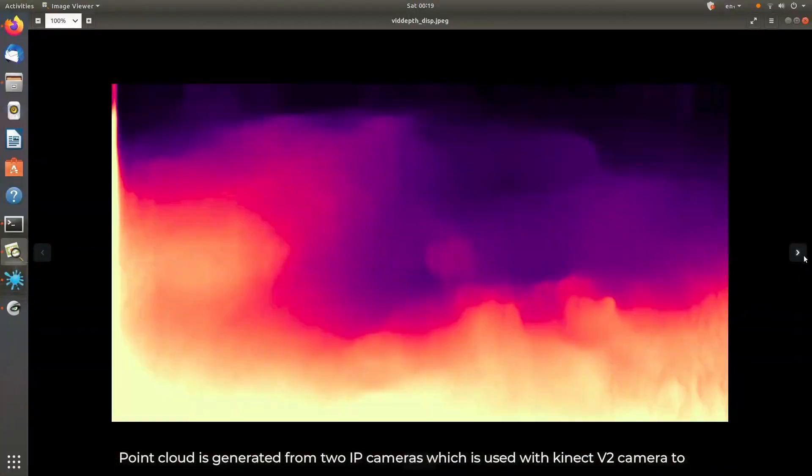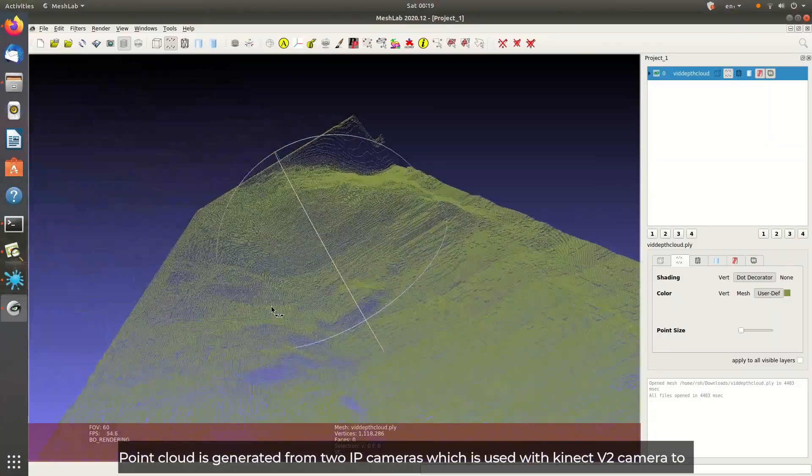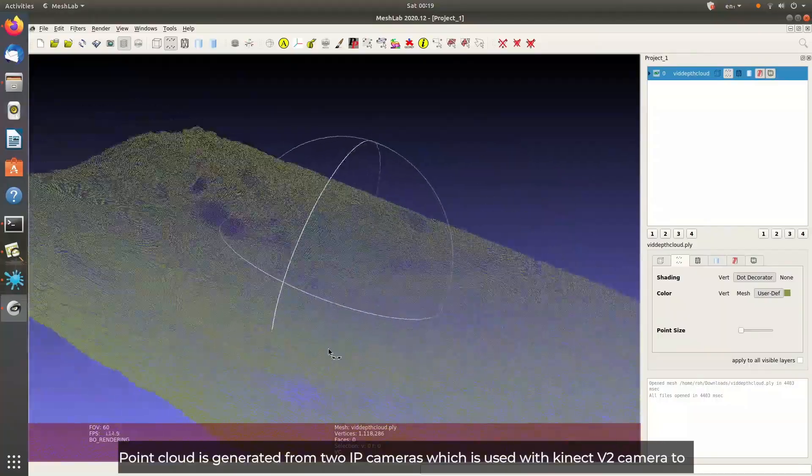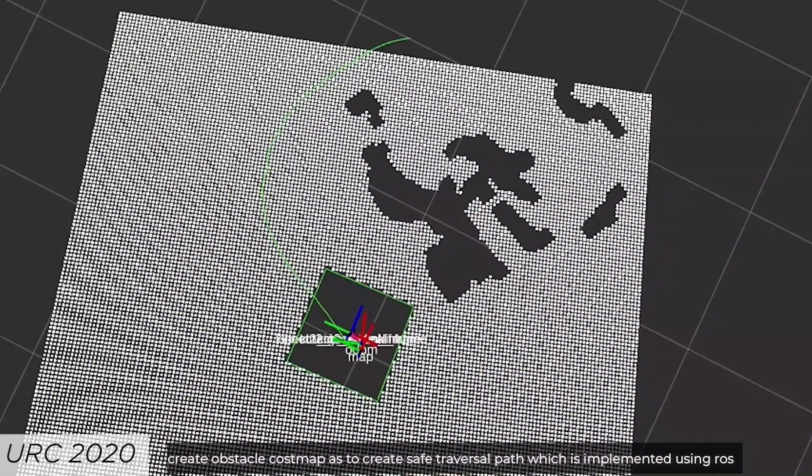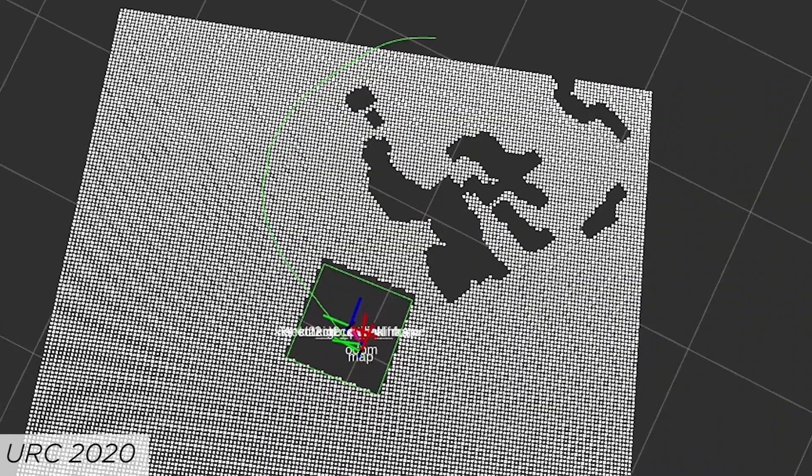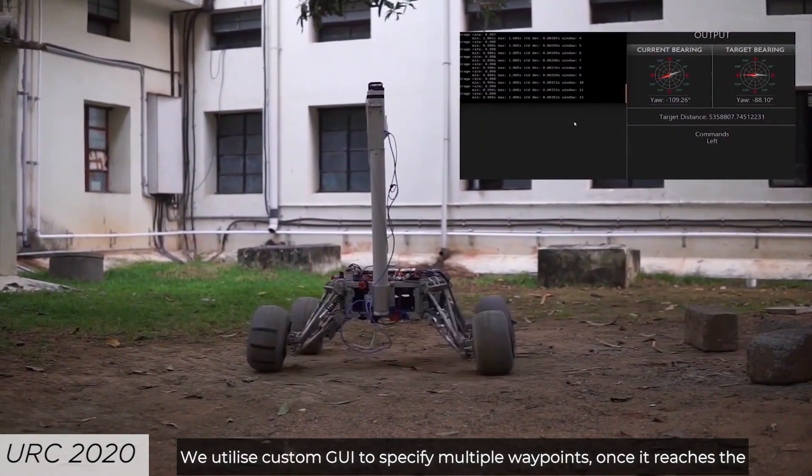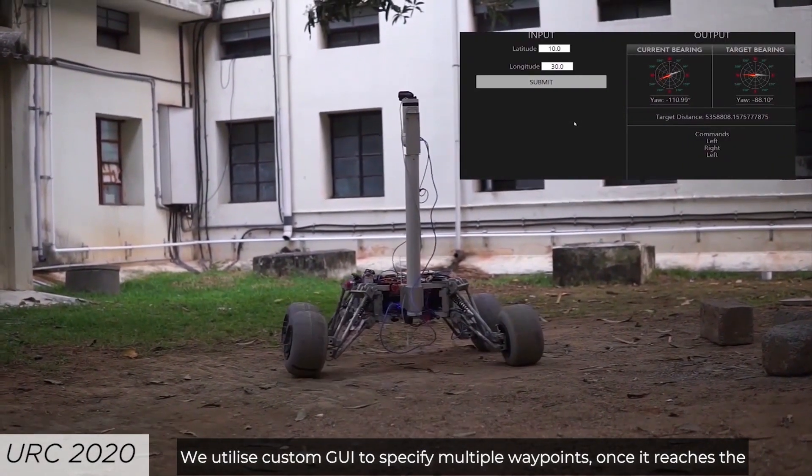Point cloud is generated from monocular video feed from two IP cameras which is fused with Kinect V2 camera to create obstacle cost map to build safe traversal path which is implemented using ROS navigation stack. We utilize custom GUI to specify multiple waypoints.